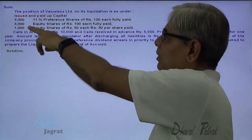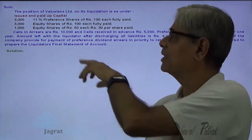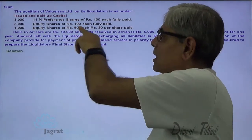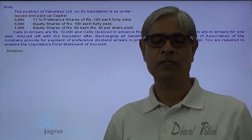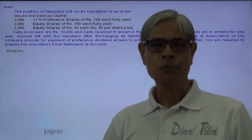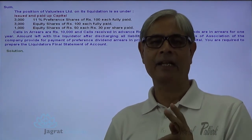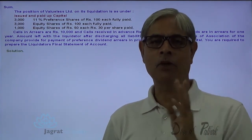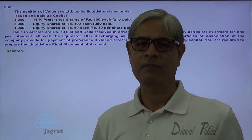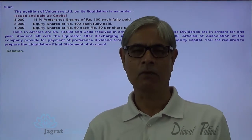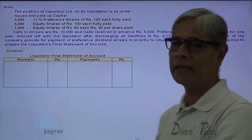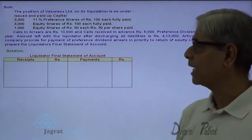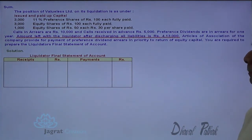The first category is 3,000 shares of rupees 100, and the second is 1,000 shares of rupees 50. We are required to distribute cash to the equity shareholders in a manner that the loss of capital to both categories is uniform. Let me start with the liquidator's final statement of accounts. Here I prepare the liquidator's statement of accounts. I will start with the cash balance available with the liquidator: 4,13,000.